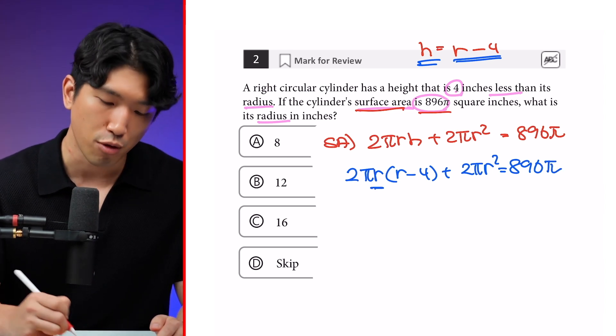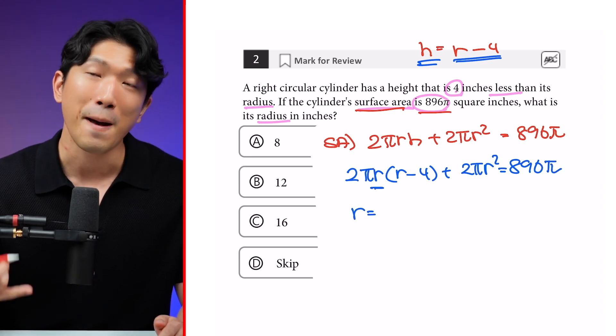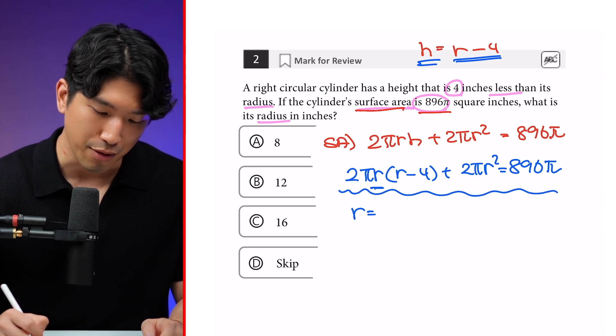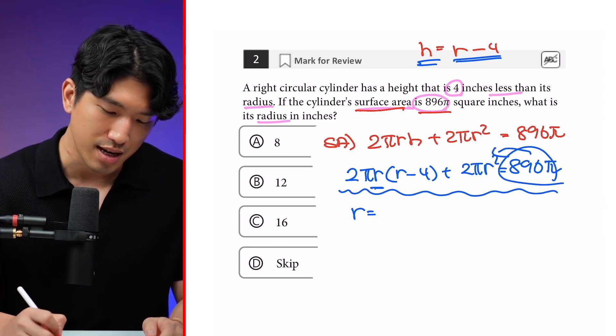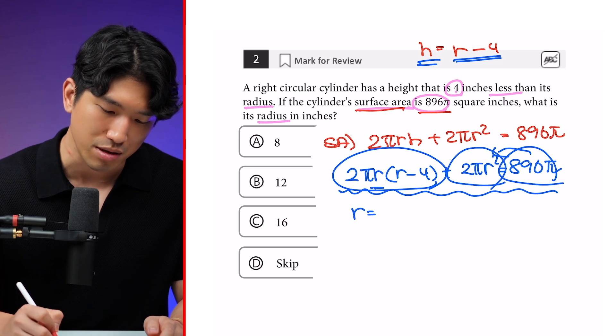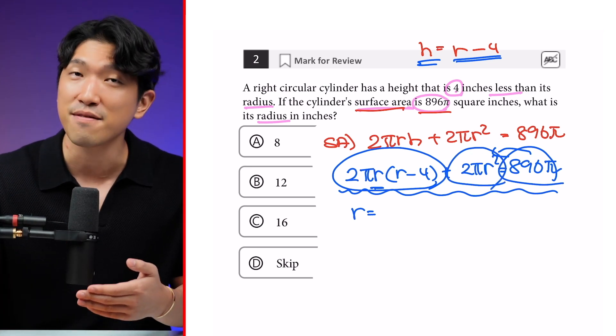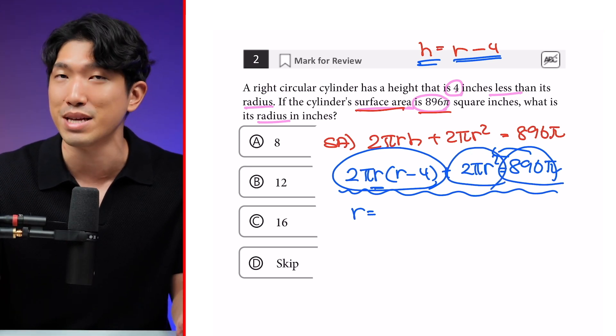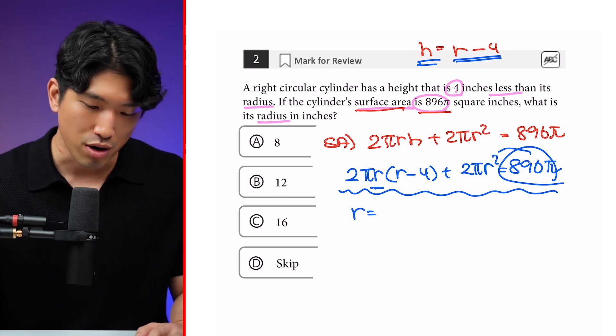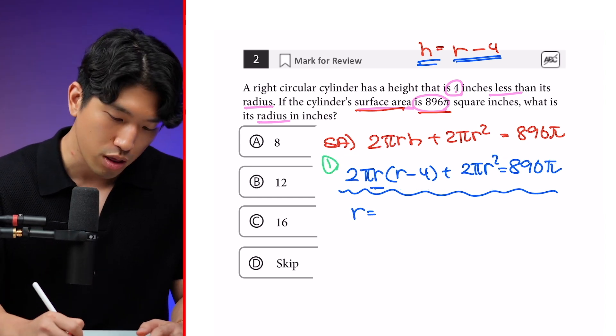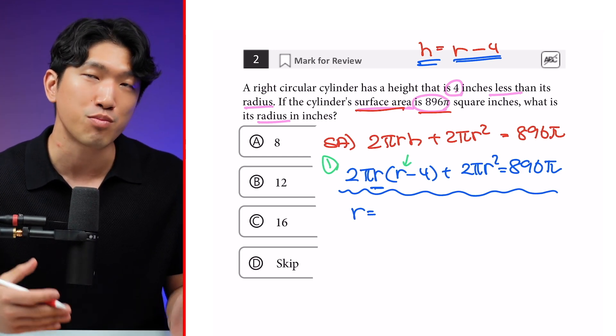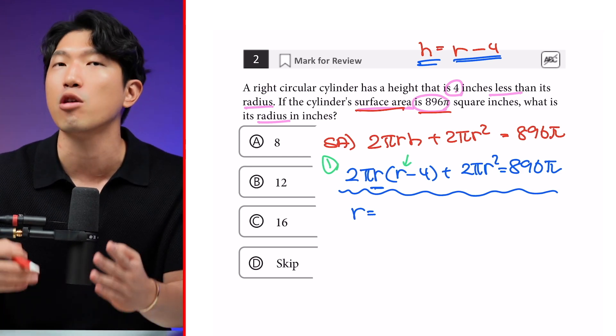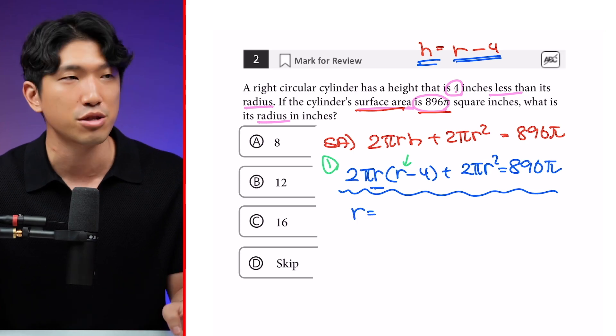And now r is the only unknown variable, which means we can solve for r. But the only problem is this looks like a lot of work. Like we have to move this to the other side, we have to expand this out, combine it with this, factor it out, and then find the value of r. And that's going to take a minute. But the good news is that what are we working with? We're working with just one equation with one unknown variable, which means we can pop this into Desmos and go to the x-intercept.